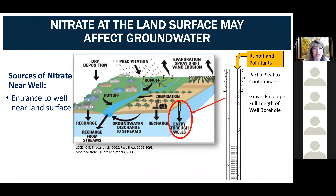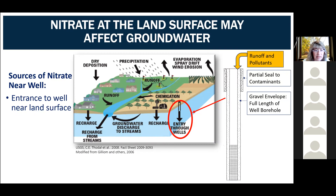Not uncommonly, older wells may have been constructed with an outer conductor casing and sealing material that only partially seals the well to contaminants at the land surface. However, as shown in this slide, runoff and pollutants can potentially move down through gravel envelopes that extend to the land surface, creating an ineffective barrier and a highly permeable vertical pathway for contaminants to move into the well structure and affect water quality.